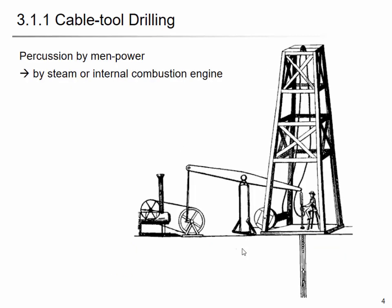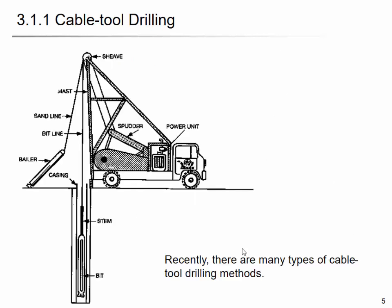After that, they used the steam engine or internal combustion engine for percussion. With cable tool drilling, they have an engine with a rotational arm and a crank so that you can repeatedly apply percussion to the ground to go deep and chip out the rock.